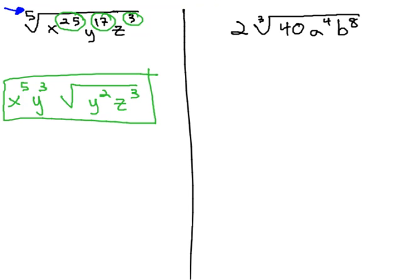Let's try a second, more interesting example. Here we have numbers and variables, and this time we're working with a cube root. Make sure we notice the index, because that tells us how many we're dividing by, and also how many numbers we need to come out of the radical. First, let's factor the 40.